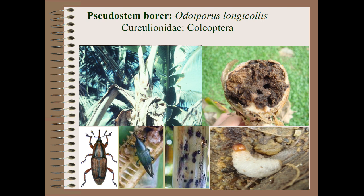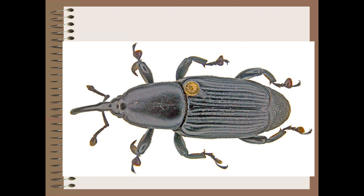The biology involves egg, grub, pupal, and adult stages. The egg period is about 3-5 days. Eggs are laid in the area of the pseudostem about 1 to 1.5 meters above the ground level. The grub period is 27 days, the pupal period is about 24 days, and pupation takes place inside the tunnels towards the periphery.